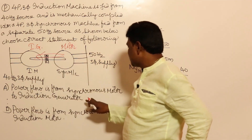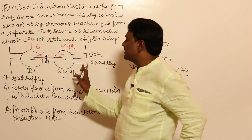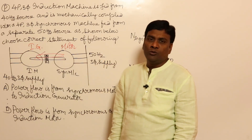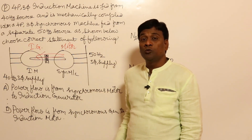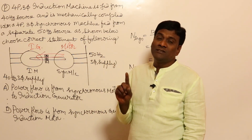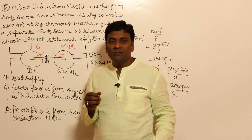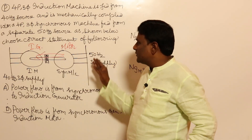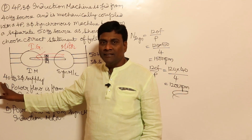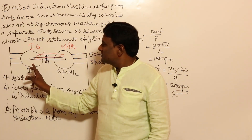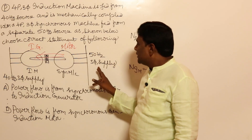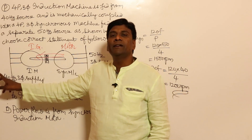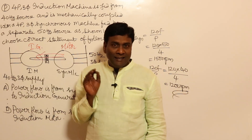So the power flow is from the synchronous motor to the induction generator. This is analogous to the situation in Japan where two grids operate at different frequencies — 50Hz and 60Hz. In our problem, one grid is 50Hz and another is 40Hz. The output of the induction generator is at 40Hz and the input of the synchronous motor is at 50Hz, enabling power transfer between the two different frequency grids.